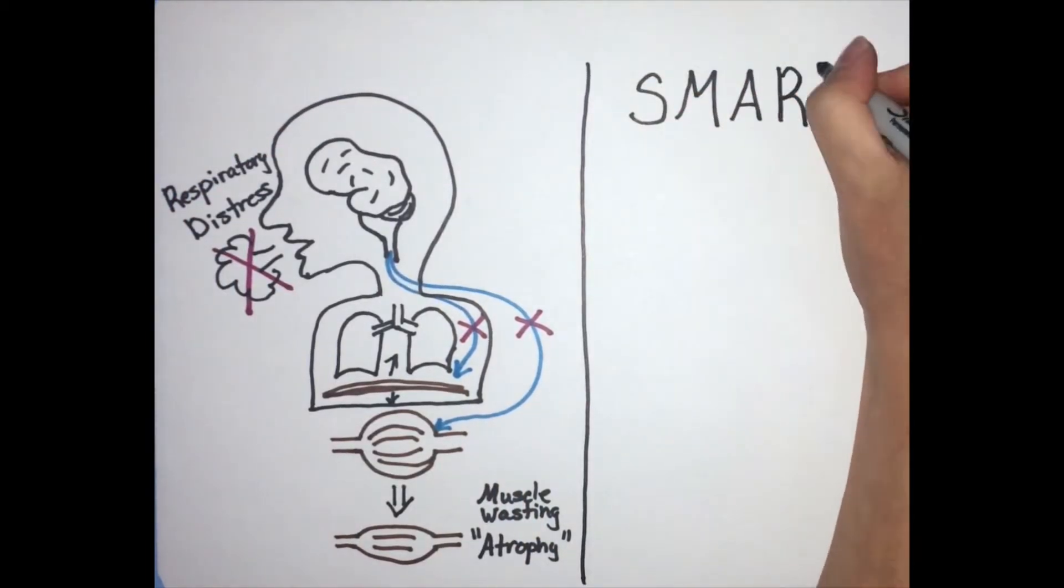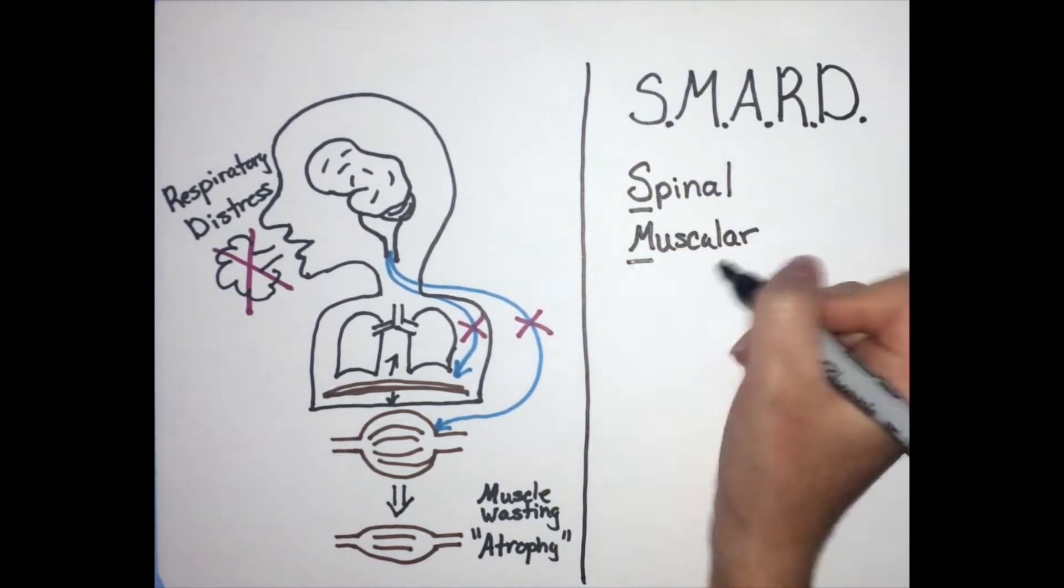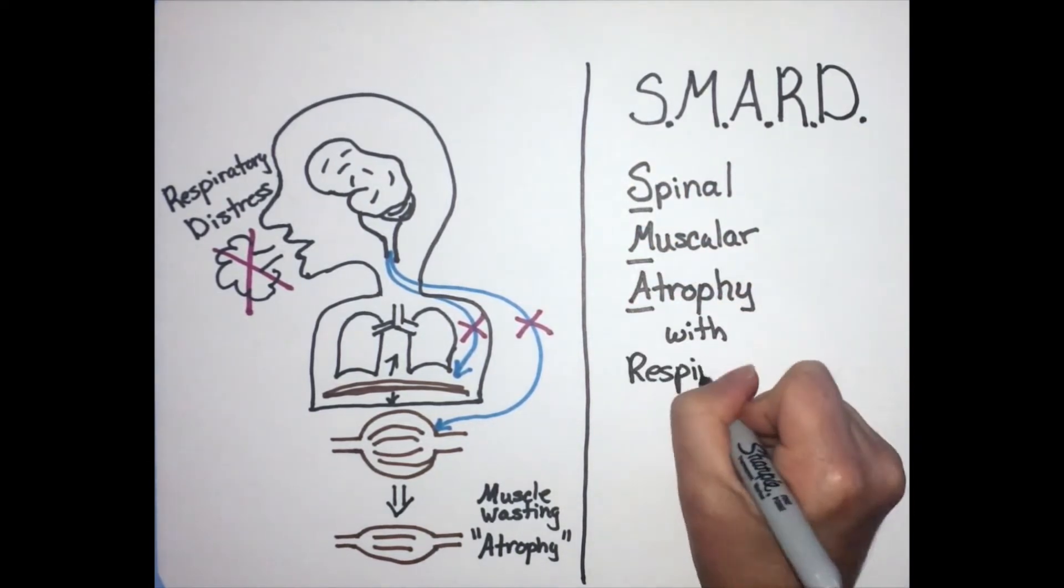That is why the full name of SMARD is spinal muscular atrophy with respiratory distress.